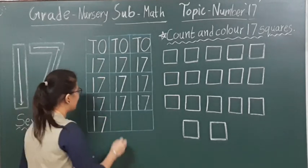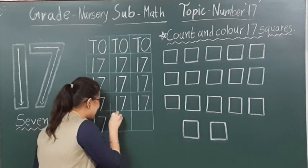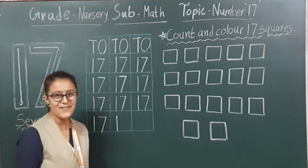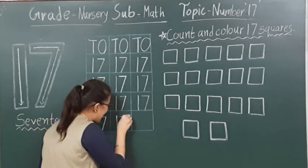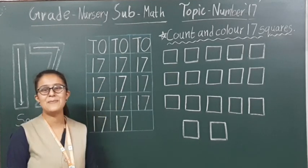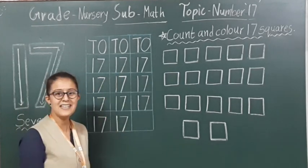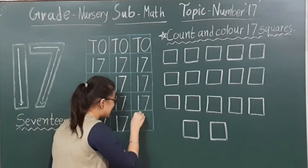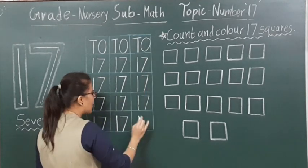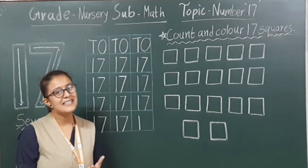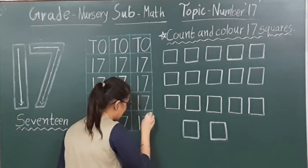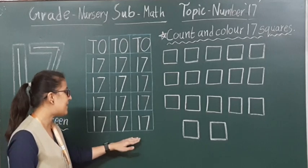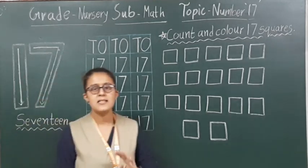Again, below the D, you have to write number 1. Below the O, number 7. Again, below the D — one sleeping line and one slanting line to make number 17. Come on, tell me: below the D, which number will come? Yes — that is number 1. And below the O — that is number 7. To make number 17, we have to make one sleeping line and one slanting line for the 7. Number 17.